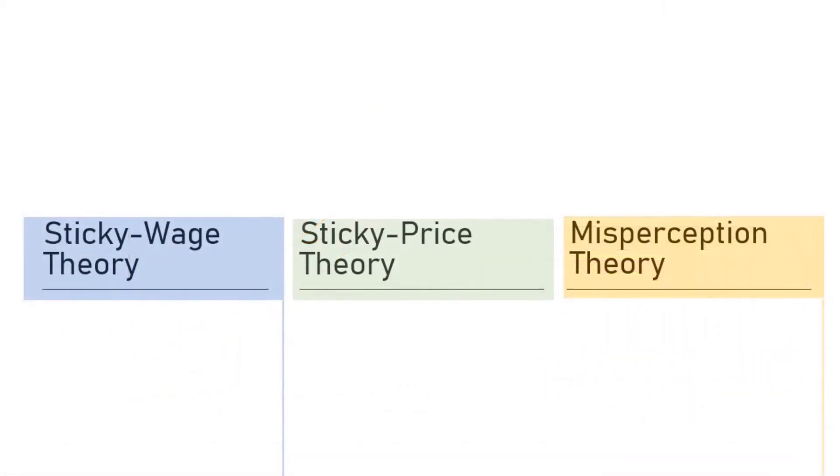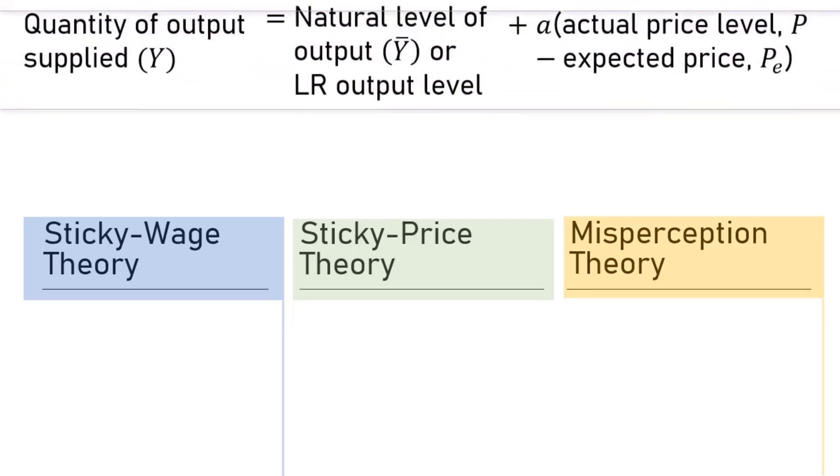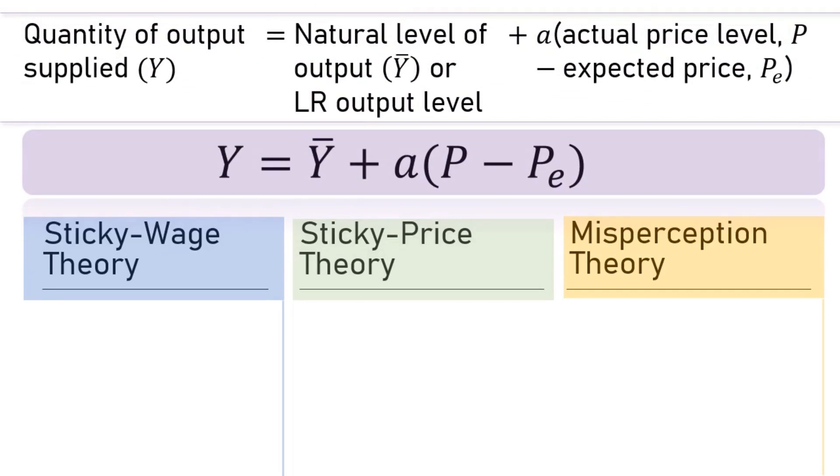Moreover, we will see also that the expected price level or Pe would become another non-price factor that could also shift the SRAS curve. Here are the SRAS theories: we have the sticky wage theory, the sticky price theory, and the misperception theory. Despite the differences among the three, the theories end up at the same positive correlation between price and output. The explanation of each theory can be better understood by introducing this supply equation: quantity of supply, Y, equals the natural level of output Ȳ, plus a certain coefficient multiplied by the difference between actual price level and expected price level, or simply Y = Ȳ + a(P - Pe).